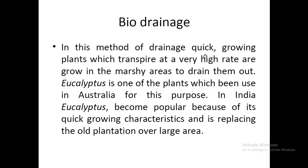In bio drainage, quick-growing plants which transpire at a very high rate are grown in marshy areas to drain them out. Eucalyptus is one such plant that has been used in Australia for this purpose. In India, this plant has become popular because of its quick-growing characteristics and is replacing whole plantations over large areas.